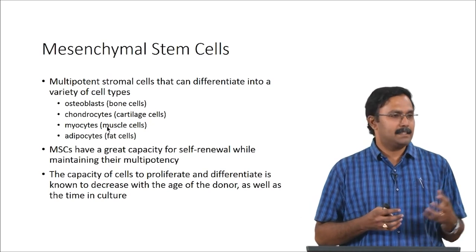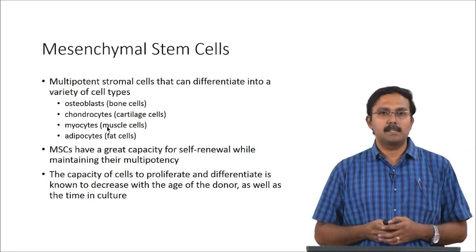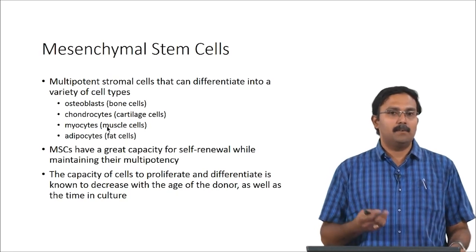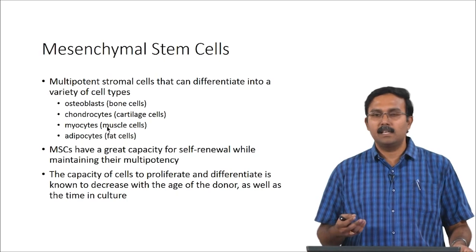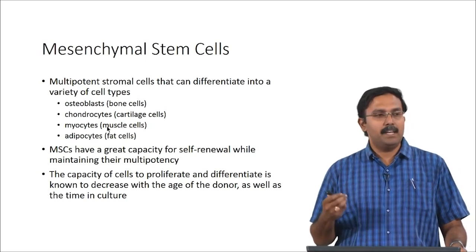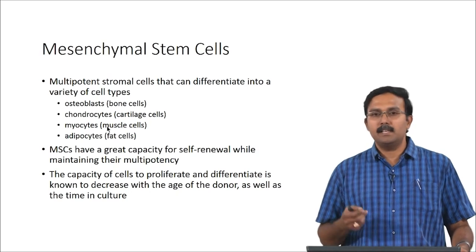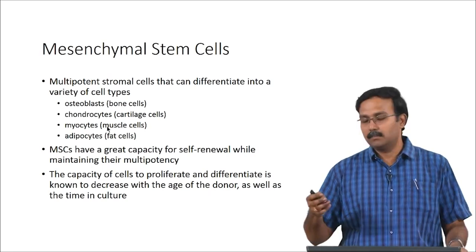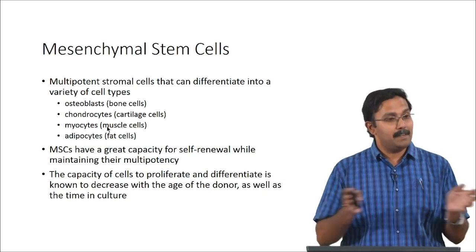The next major type of stem cells extensively studied and used in tissue engineering applications is the mesenchymal stem cells. These are multipotent stromal cells that can differentiate into a variety of cell types — they have been shown to form osteoblasts, chondrocytes, myocytes, and adipocytes. Osteoblasts are bone cells, chondrocytes are cartilage cells, myocytes are muscle cells, and adipocytes are fat cells. Mesenchymal stem cells have a very good capacity for self-renewal while maintaining their multipotency, but the capacity to proliferate and differentiate decreases with the age of the donor as well as time in culture.